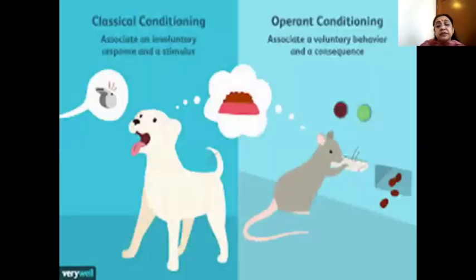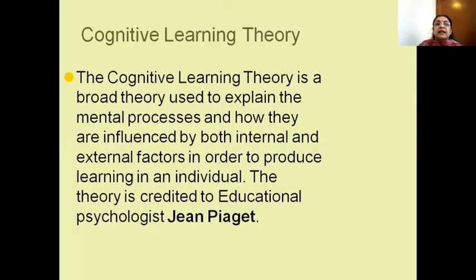There is a difference between the two. Classical conditioning, we associate an involuntary response to a stimulus. In operant conditioning, we are going to associate a voluntary behavior to a consequence. It could be reward, it could be punishment.